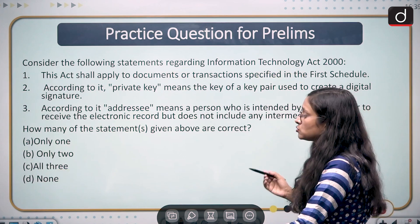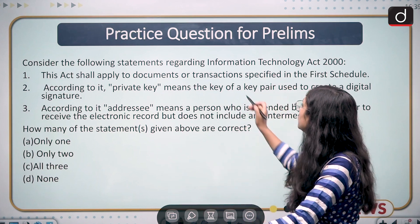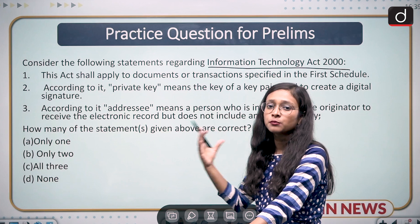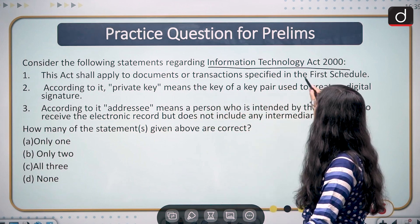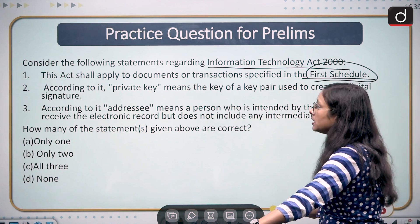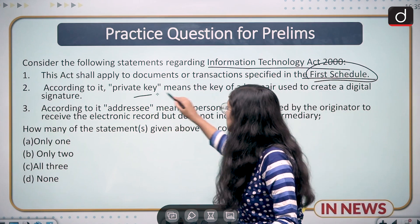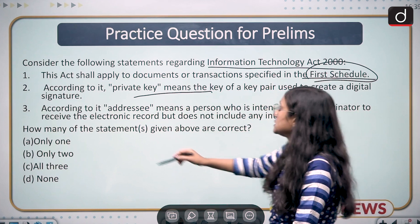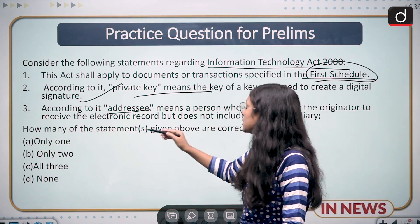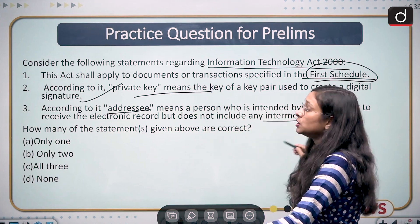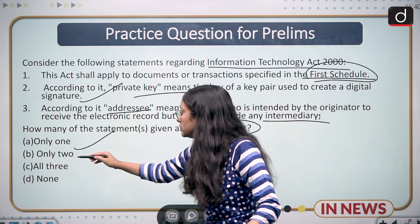Moving to the question part. A practice question related to the Information Technology Act 2000 is as follows. Statement 1: This Act shall apply to documents or transactions specified in the first schedule. Statement 2: According to the IT Act 2000, a private key means the key of a key pair used to create a digital signature. Statement 3: According to it, 'addressee' means a person who is intended by the originator to receive the electronic record but does not include any intermediary. You have to answer in the comment section. Options: only one, only two, all three, or none.